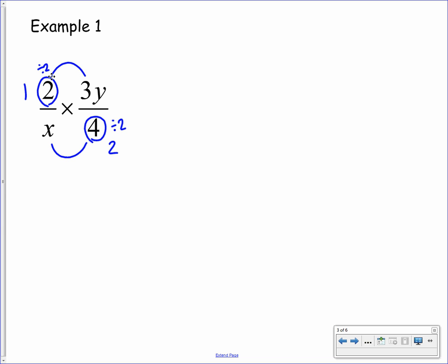Now, these are the numbers that we will use for our multiplication. So on the numerator, we have 1 times the 3y. Well, that simply leaves it with 3y. On the denominator, we have x multiplied by 2, so we end up with 2x. This fraction is your answer given in its simplest form. Pause the video and copy this into your jotter.